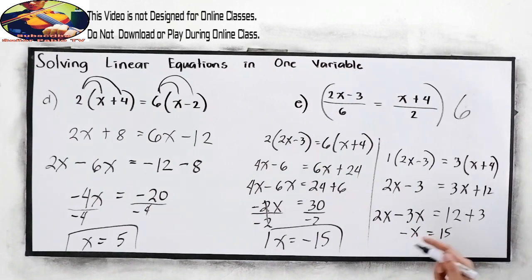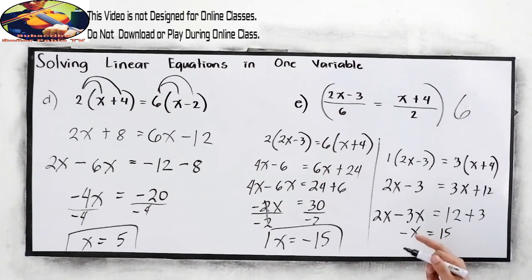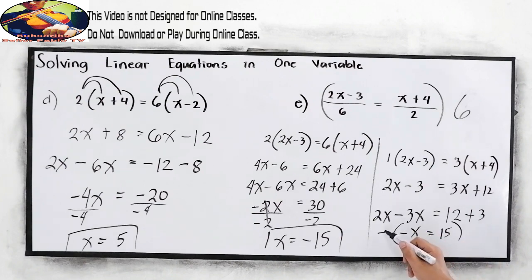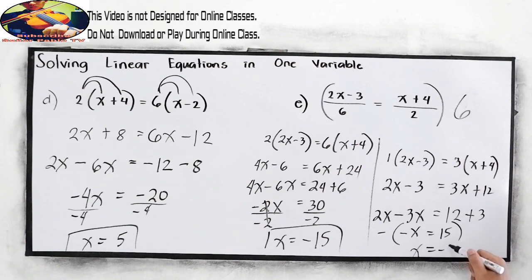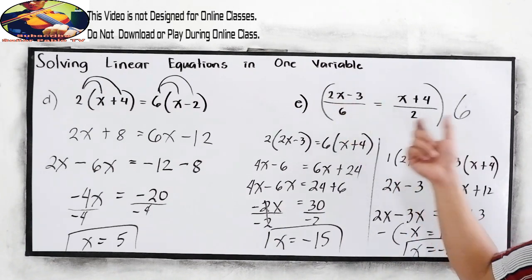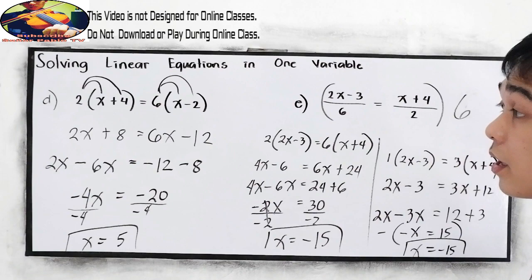We need the positive value for x, so multiply both sides by negative 1. Negative times negative gives positive x, equal to negative times positive 15, which is negative 15. Both methods give the same answer. If you want to check your answer, just substitute the value of x into the original equation.